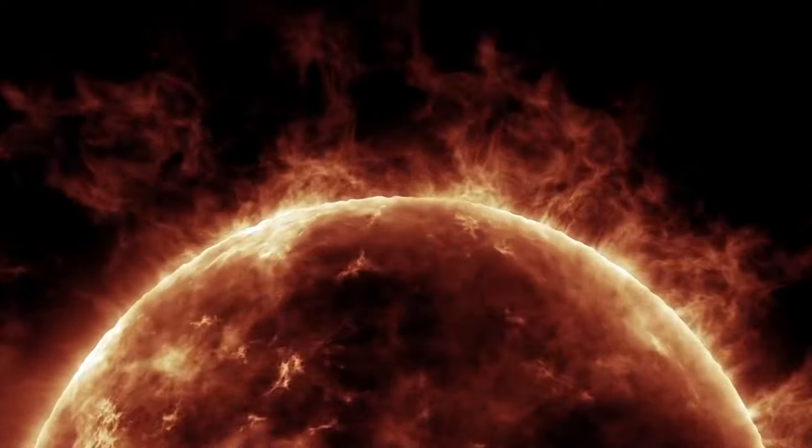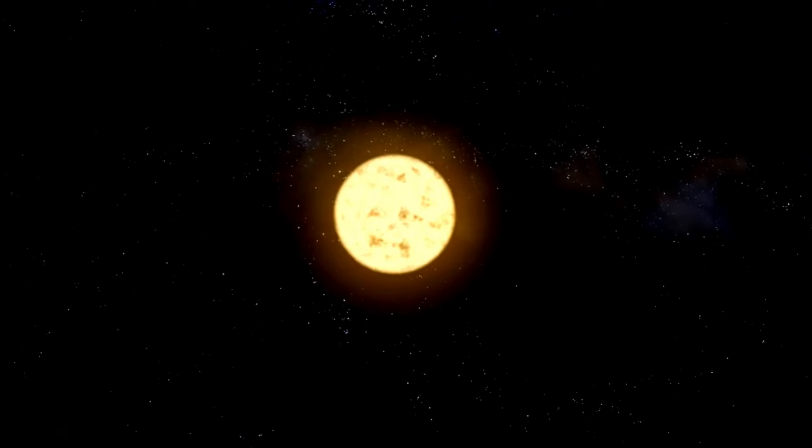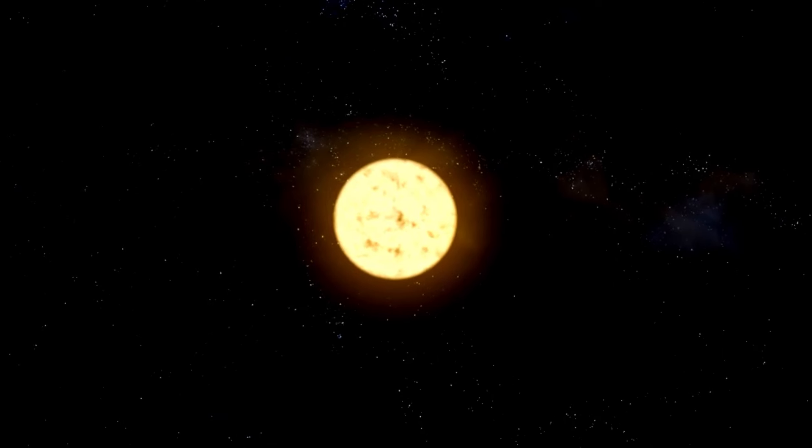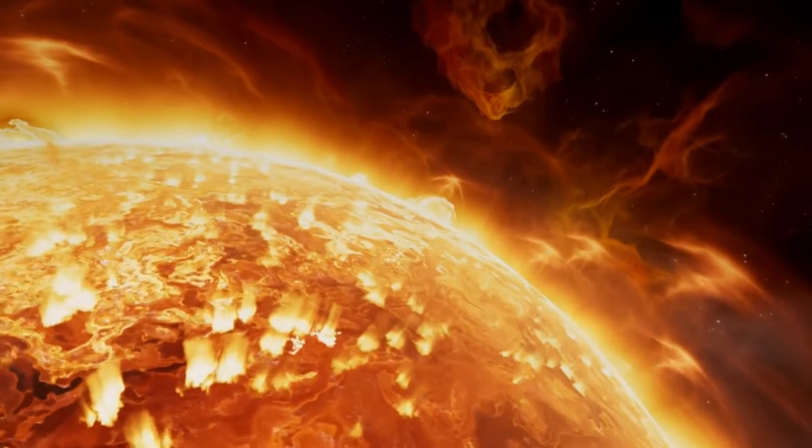As the hydrogen fuel runs low, the star's core contracts and heats up, causing the outer layers to expand and cool, turning the star into a red giant. For stars like our sun, this marks the beginning of the end.